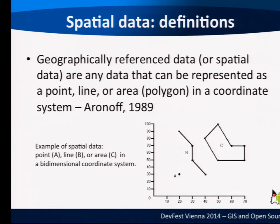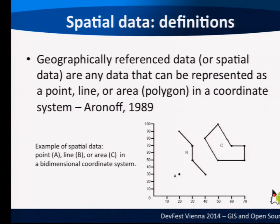We are going to speak a lot about spatial data. This is a very simple introduction. We'll see Aronoff very often because he's one of the people who was pivotal in developing definitions in the GIS world. Geographical reference data, or spatial data, is any data that can be represented by a point, a line, or a polygon. We have a set of coordinates — a point, a line, or a polygon. This is spatial data.